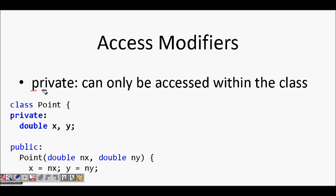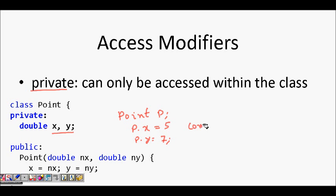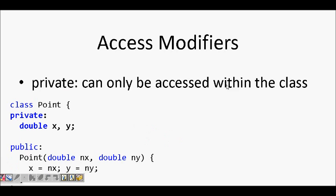Now let's look at the private access modifier. We define the data attributes X and Y coordinates as private. The difference is: if in 'int main' you write 'Point P;' and then try to do 'P.X = 5' or 'P.Y = 7', it will give a compilation error, because your access is now limited. Private means only the functions inside the class can access X and Y.